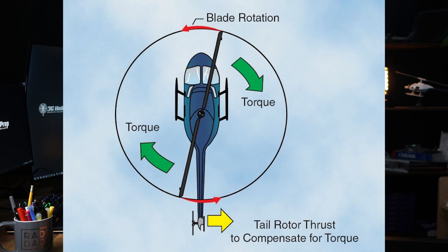When the main rotor blades of a helicopter rotate, they generate lift, which allows the helicopter to fly. However, this rotation also generates torque, a force that tends to rotate the helicopter's fuselage in the opposite direction of the rotor blades.